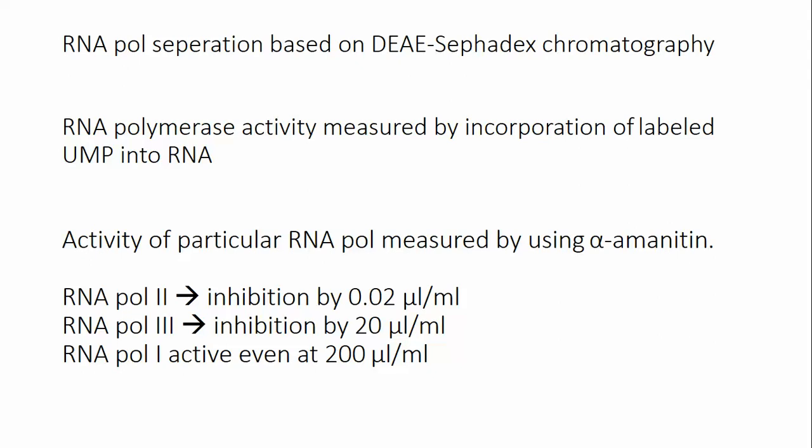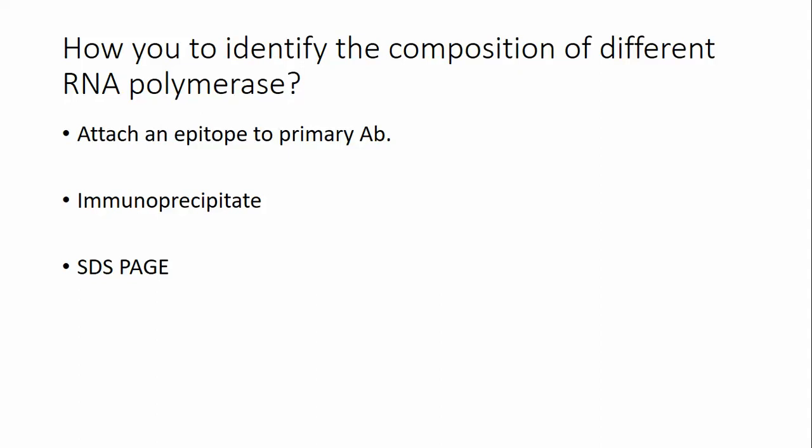RNA Polymerase I remained active even when alpha-amanitin was at a concentration of 200 micrograms per ml. The particular bands still visible at that concentration were those transcribed by RNA Pol I.